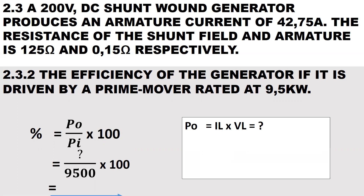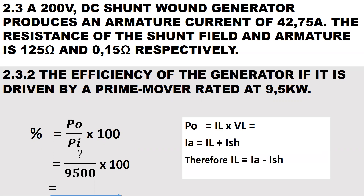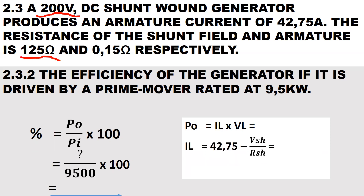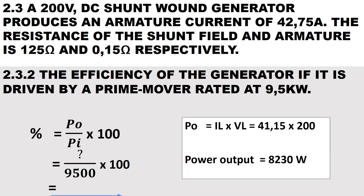To calculate the output power, it is the supply current multiplied by the supply voltage. However, the armature current is given, so we'll have to determine the supply current first. To determine the supply current, it'll be IA minus I shunt — just remember generator is always positive. So the armature current of 42.75 minus V shunt over R shunt gives us a supply current of 41.15 amps. Now we can calculate output power: supply current multiplied by the supply voltage of 200, giving an output power of 8,230 watts.